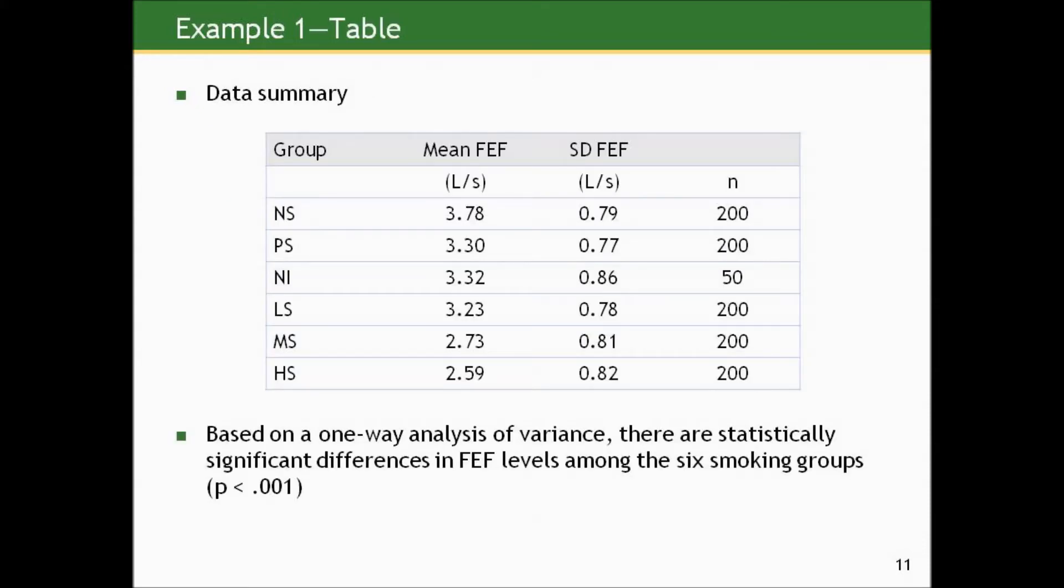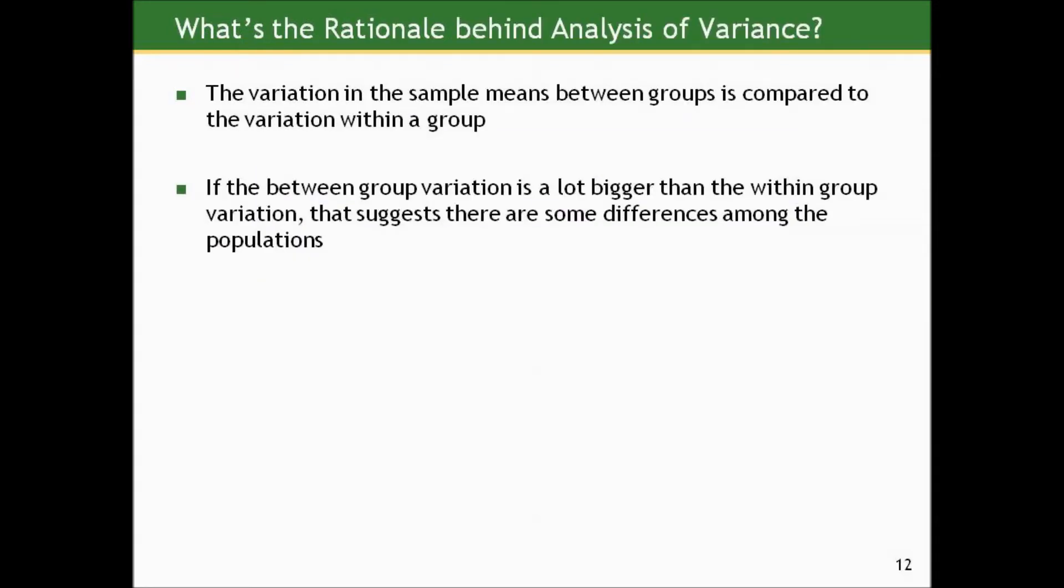Here's the summary data. I'll just cut to the punchline here and then tell you how to interpret it. Based on a one-way analysis of variance, there are statistically significant differences in forced mid-expiratory flow levels, FEF levels, between the six smoking groups. The p was less than 0.01. So now all we know with that p-value is that at least one mean is different than the others. And now we would actually need to go for combinations of groups to find out where the differences are and to quantify them with confidence intervals using a t-test-like approach.